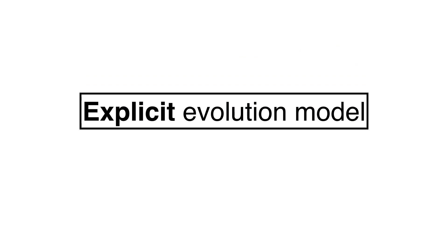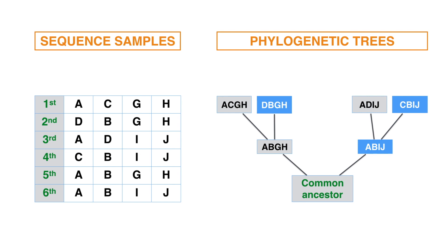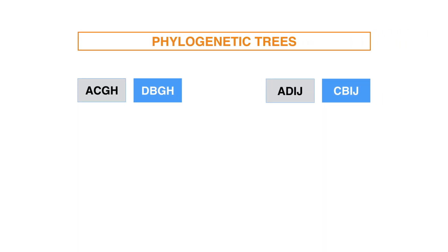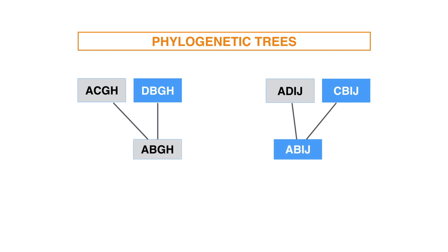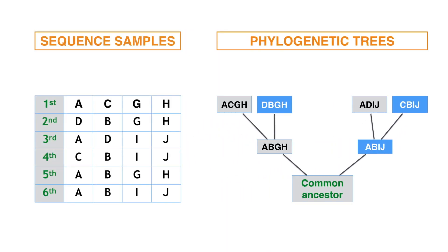Evolution is naturally depicted in phylogenetic trees, which show the evolutionary interrelations of a group of organisms derived from a common, often unknown ancestor. Each node represents an organism and each branch a descendant relation. The common ancestor is placed at the root of the tree. In this illustration, a sequence of samples is organized in a phylogenetic tree according to their descendant relations.